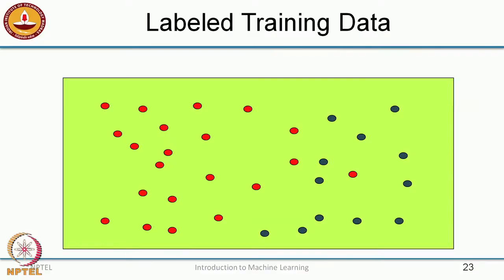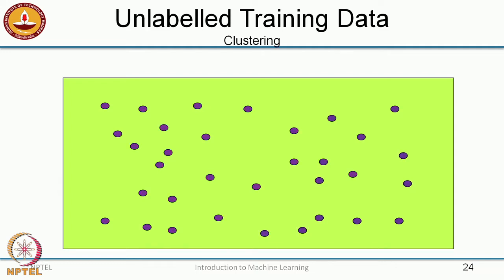Welcome to this module on introduction to unsupervised learning. In supervised learning we looked at how you handle training data that had labels on it — for example, a classification dataset where red denotes one class and blue denotes the other. In unsupervised learning, you basically have a lot of data given to you, but they do not have any labels attached to them.